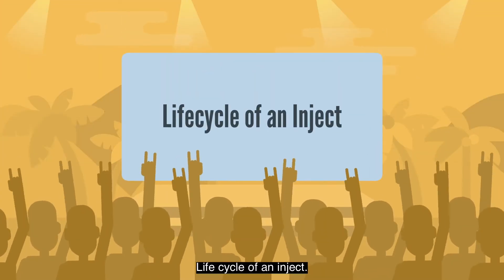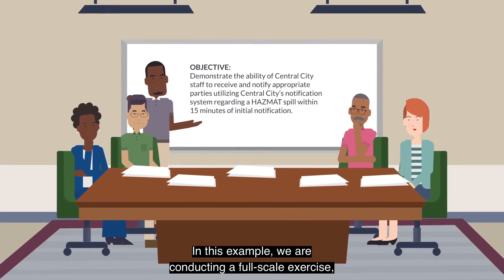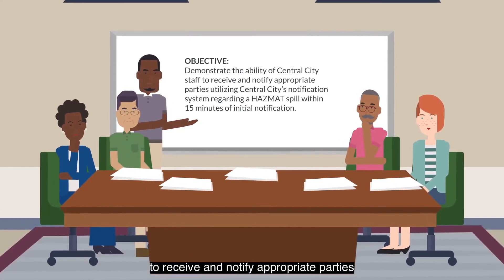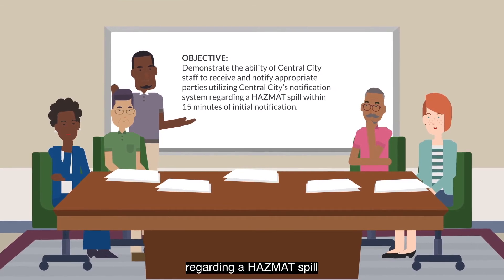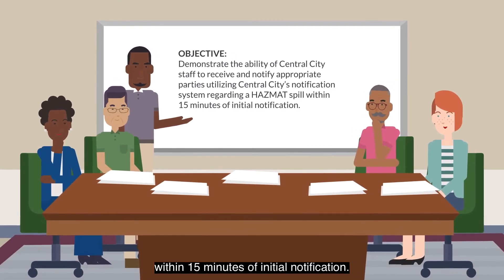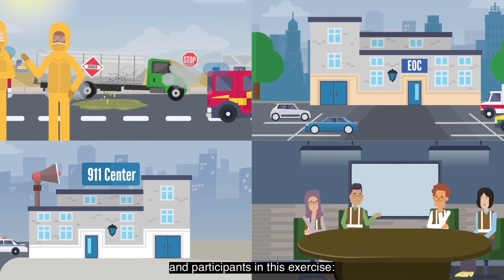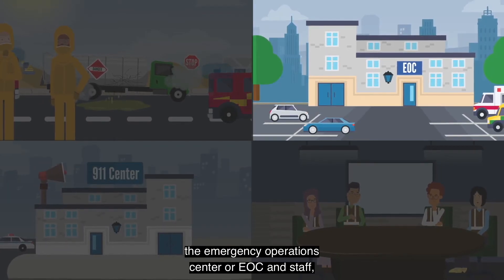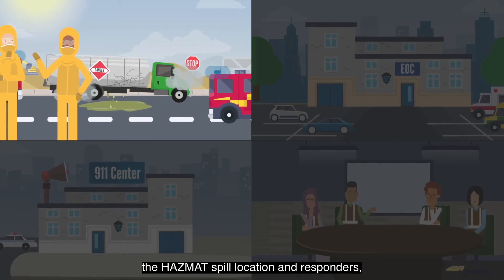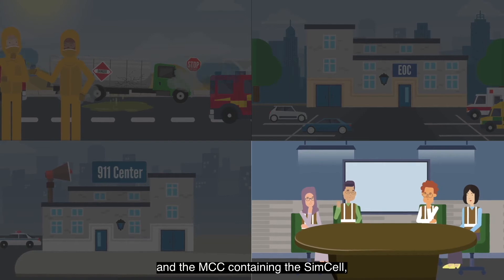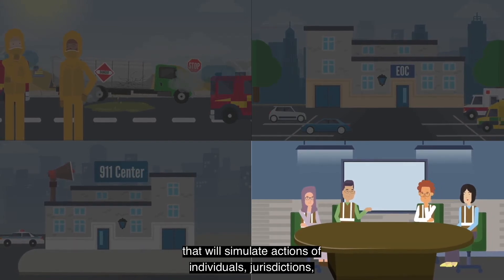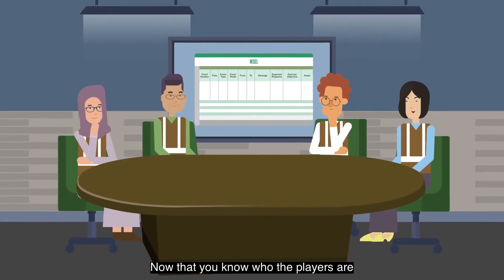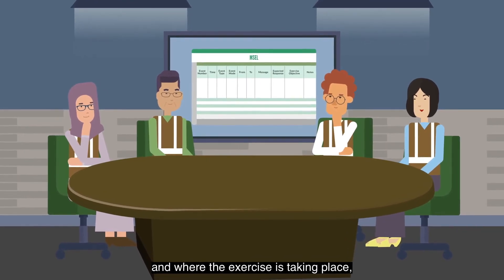Now let's walk through the life cycle of an inject and show how these roles come into play. In this example, we are conducting a full-scale exercise which demonstrates the ability of Central City staff to receive and notify appropriate parties, utilizing Central City's notification system regarding a HAZMAT spill within 15 minutes of initial notification. The exercise includes the 911 Center and staff, the Emergency Operations Center (EOC) and staff, the HAZMAT spill location and responders, and the MCC containing the SimCell, which hosts participants that simulate actions of individuals, jurisdictions, or organizations not participating in the exercise.